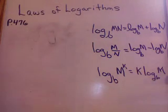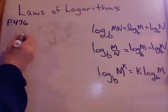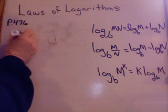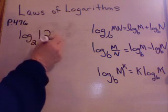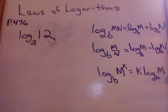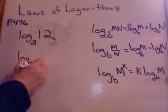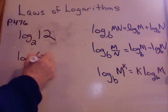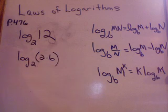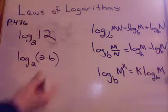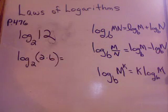So for example, suppose I had log base 2 of the number 12. Well, I could rewrite that. I have a lot of choices. I could think of some multiples of 12. And you know that 12 could be written as 2 times 6. Now, do you see how it's approaching what this law might look like? Do you know how I could rewrite this as the sum of two logarithms?